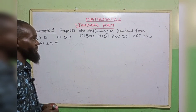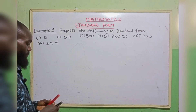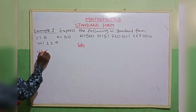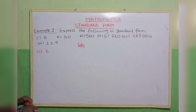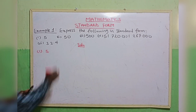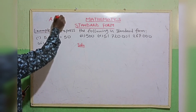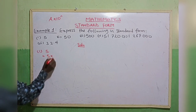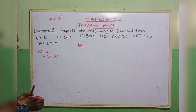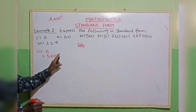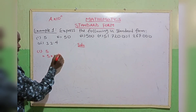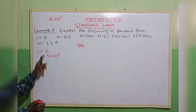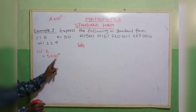Example 1: express the following in standard form. The first one — we want to express 5 in standard form. Don't forget, our standard form must be of the form a multiplied by 10 raised to the power n. So, if we only have a one-digit number, which is 5, we have 5 multiplied by 10 raised to the power 0, because 10 raised to the power 0 is 1, and 1 multiplied by 5 gives 5. So, the standard form of 5 is 5 times 10 raised to the power 0.